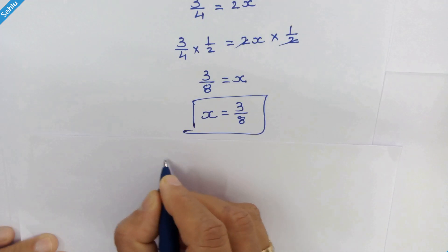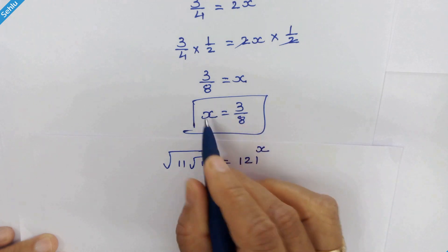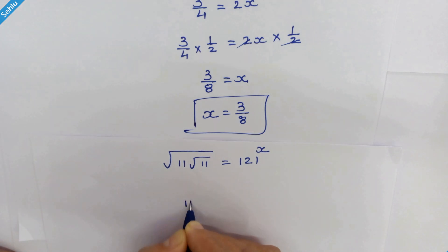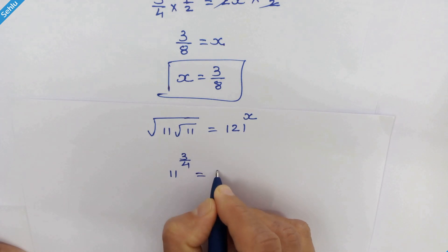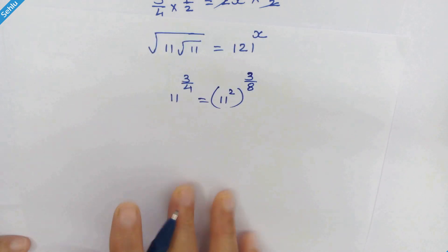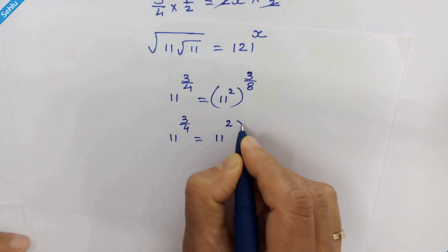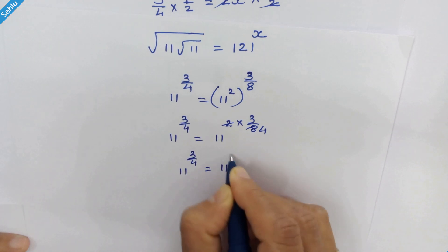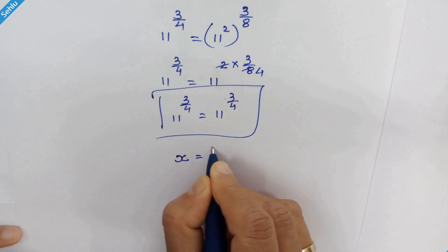So we have the value of x as 3 upon 8. Let's check in the question itself: square root of 11 times square root of square root of 11, equal to 121 raised to x. We already evaluated the left hand side as 11 raised to 3 upon 4. Substituting x equals 3 upon 8, the right hand side becomes 11 squared times 3 upon 8, which gives 11 raised to 3 upon 4. So 11 raised to 3 upon 4 equals 11 raised to 3 upon 4, confirming x equals 3 upon 8 is the correct answer.